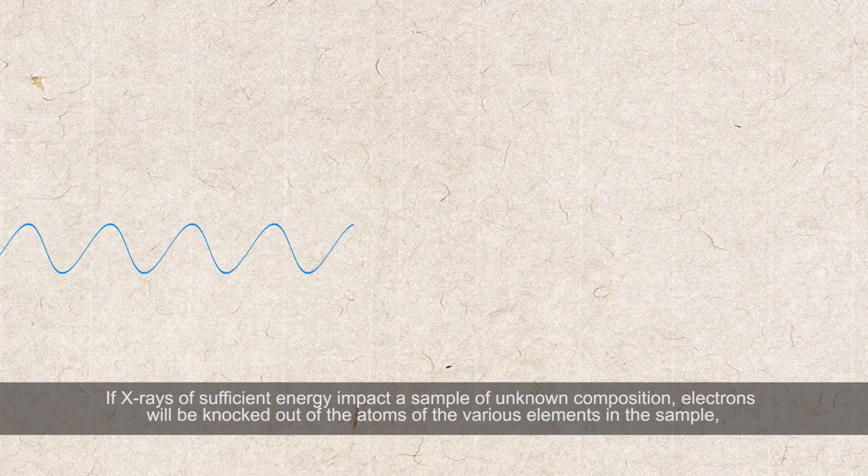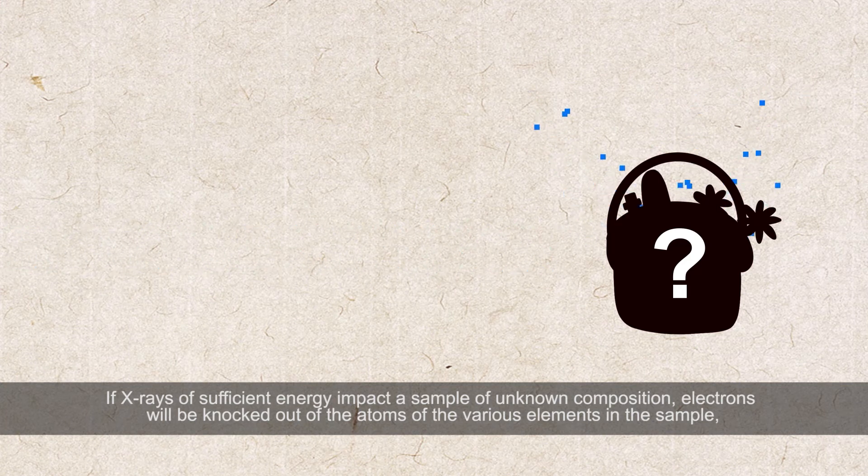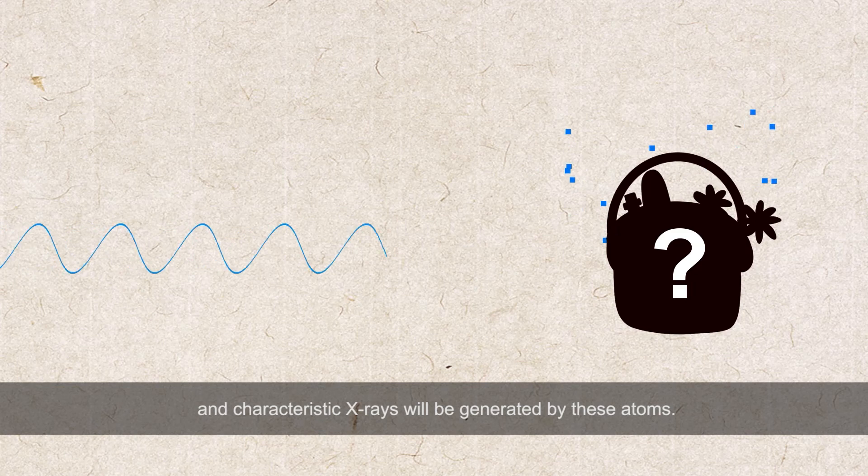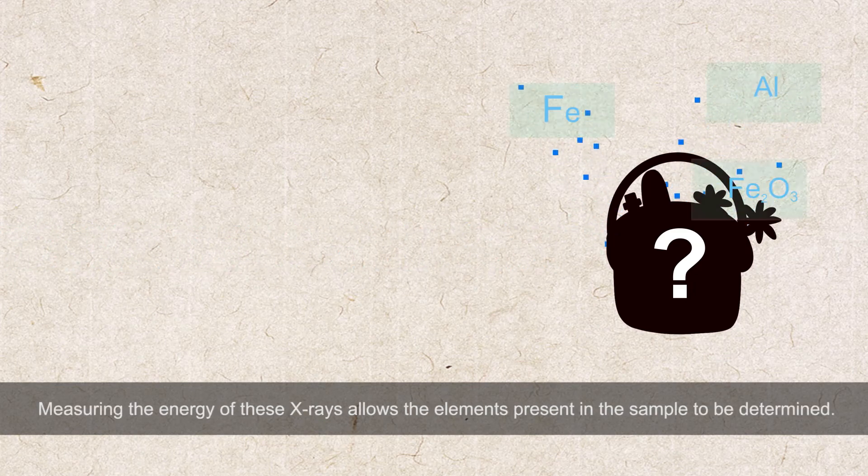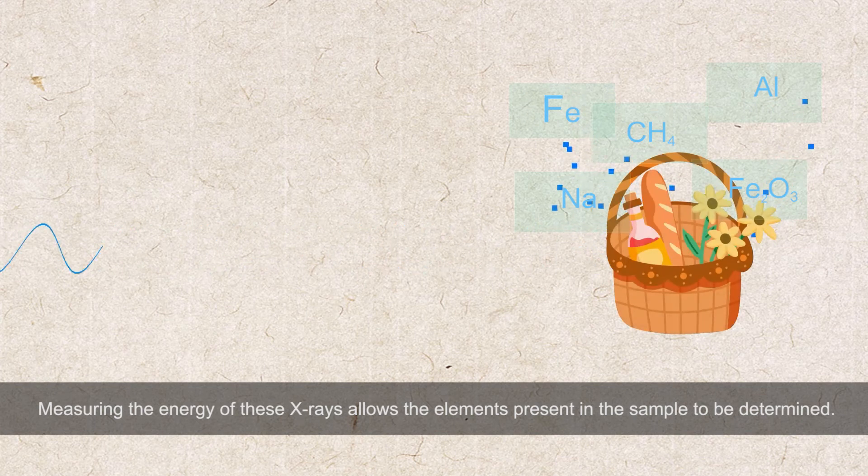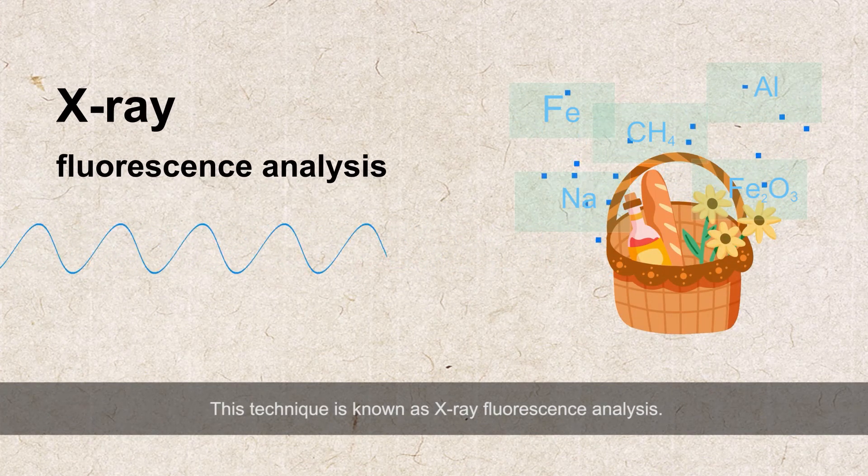If X-rays of sufficient energy impact a sample of unknown composition, electrons will be knocked out of the atoms of the various elements in the sample, and characteristic X-rays will be generated by these atoms. Measuring the energy of these X-rays allows the elements present in the sample to be determined. This technique is known as X-ray fluorescence analysis.